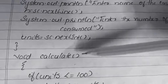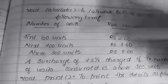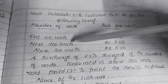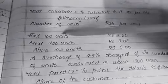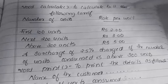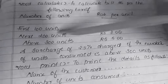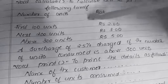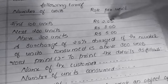Now declare void calculate and open the method. The tariff works as follows: for the first 100 units, the rate is rupees 2 per unit — meaning if you use 50 units you pay 50 into 2, which is 100 rupees. For the next 200 units the rate is rupees 3 per unit. Above 300 units the rate is rupees 5 per unit.